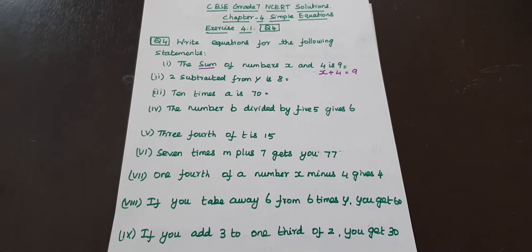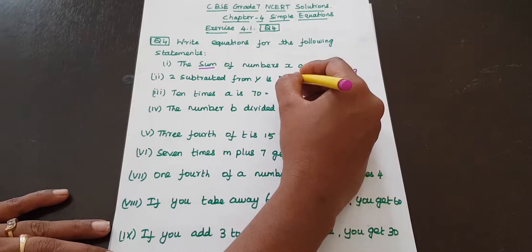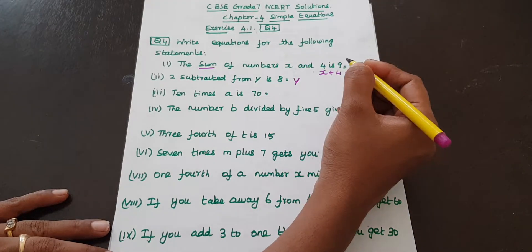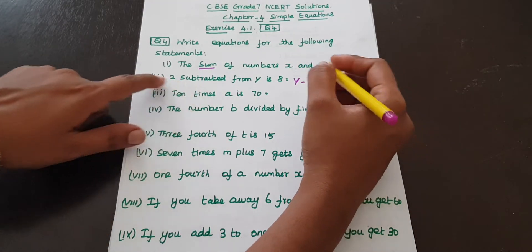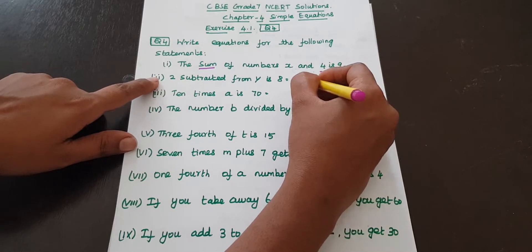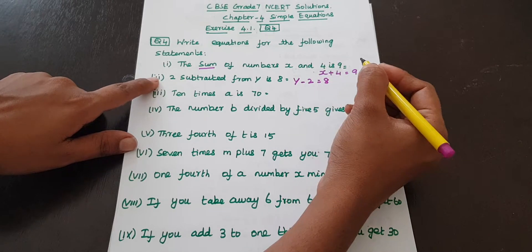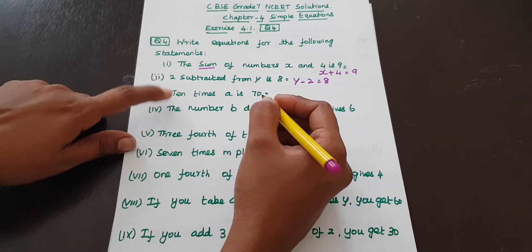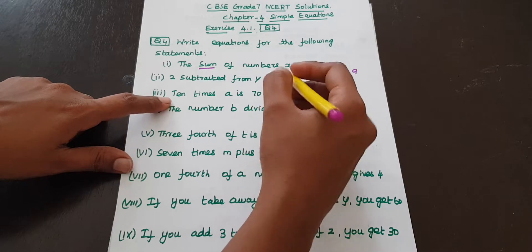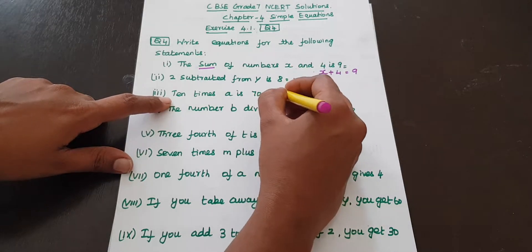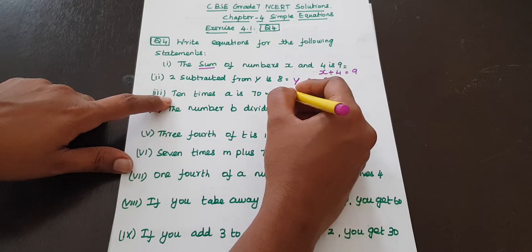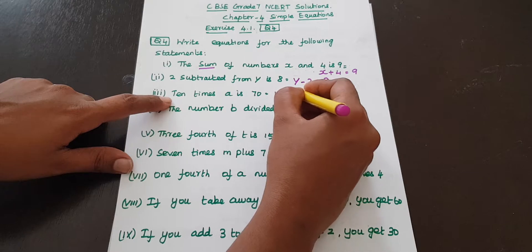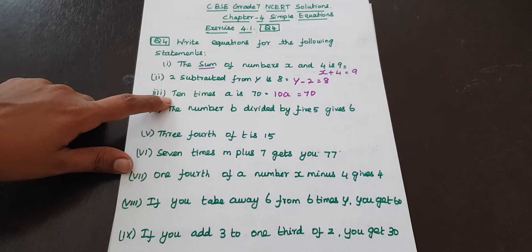Next: 2 subtracted from y — here y comes first, so y minus 2 is equal to 8. Next: 10 times a is 70 — 'times' means multiply, so 10a is equal to 70.